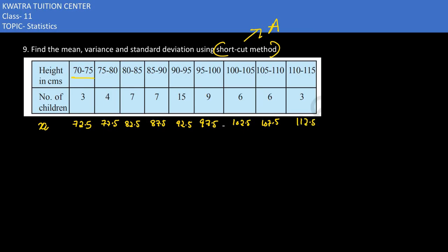For the x_i values, you have y_i, which is x_i minus a divided by h. Now what do we have to do for x_i?